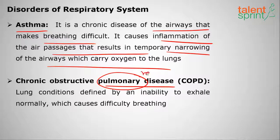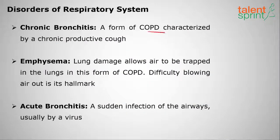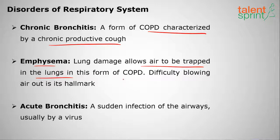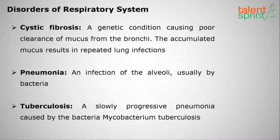Chronic Obstructive Pulmonary Disease (COPD) — pulmonary means related to lungs — is defined by an inability to exhale normally, causing difficulty breathing. Chronic bronchitis is a form of COPD characterized by a chronic productive cough. Emphysema is lung damage that allows air to be trapped in the lungs, making it difficult to blow air out. Acute bronchitis is a sudden infection of the airways, usually by a virus. Cystic fibrosis is a genetic condition causing poor clearance of mucus from the bronchi.